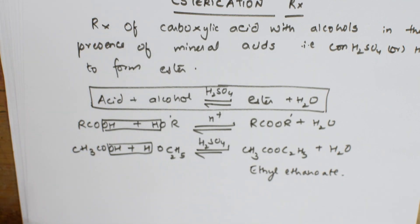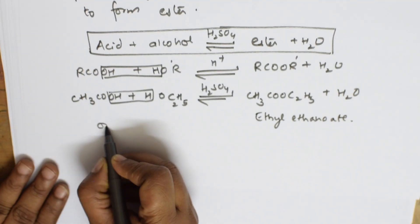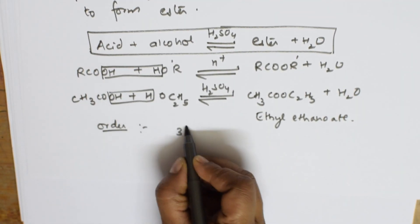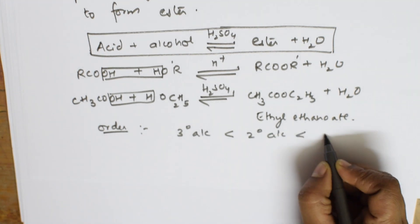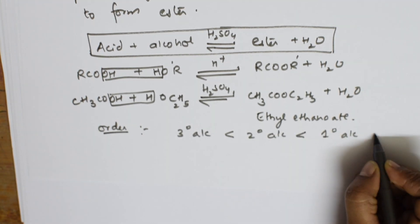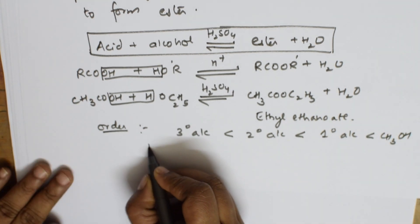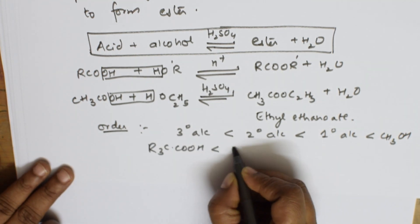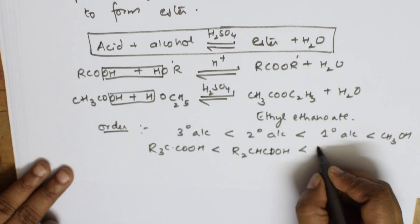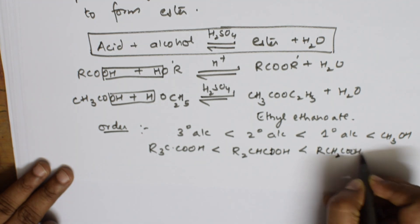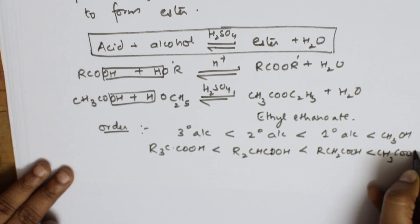Now, regarding the reactivity order of alcohols towards esterification: tertiary alcohols show the least tendency, followed by secondary alcohols, then primary alcohols, then methanol — which shows the most tendency. In terms of acids, the order goes from acetic acid to formic acid. Tertiary alcohols have three alkyl groups, secondary have two, and primary have one alkyl group.